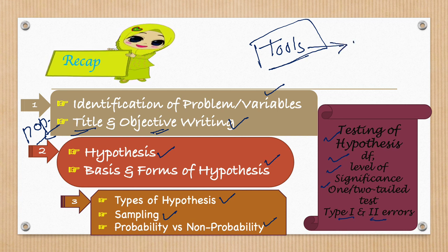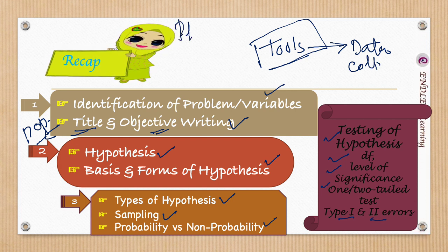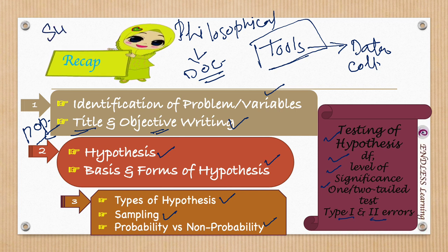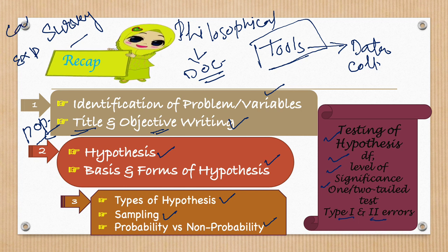For data collection we need a tool. In philosophical research or historical research, we collect the data from documents — from existing sources. So in these two types of research we don't need the tools. But in survey studies, where we have to collect information, or in experimental studies, or in case studies, we have to collect the data and we need a tool for that data collection.